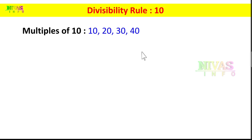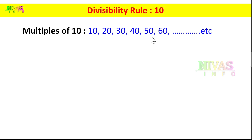Divisibility Rule 10. Here we have the multiples of 10: 10, 20, 30, 40, 50, 60, and so on. These multiples are all divisible by 10. Why? Because all of these multiples end in 0.